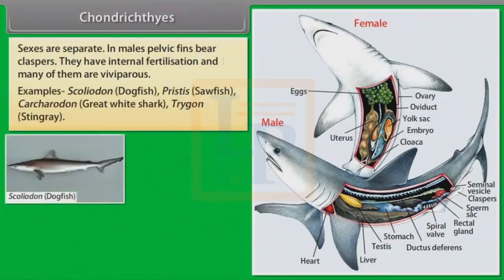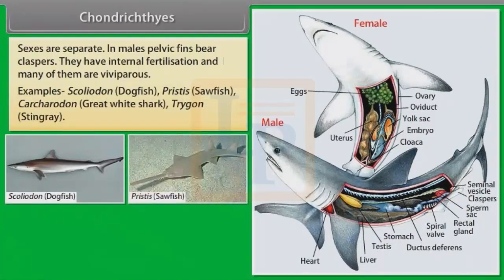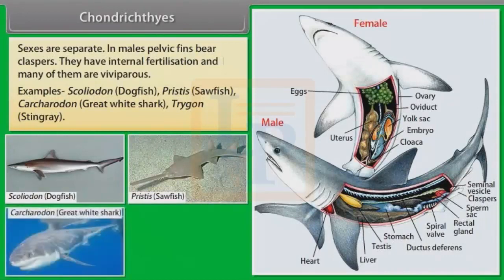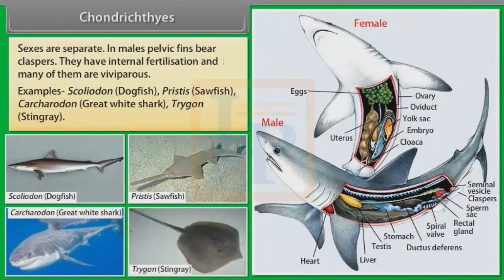Examples: Scoliodon (Dogfish), Pristis (Sawfish), Carcharodon (Great White Shark), Trigon (Stingray).